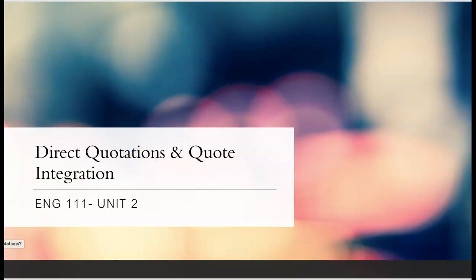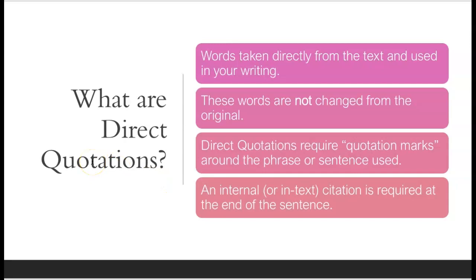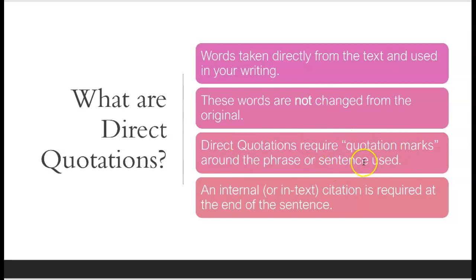Direct quotations are words taken directly from the text — the author's words, not changed from the original. In order to show that they are the author's words and not yours, they require quotation marks around the phrases or sentences. If you fail to do that, that is plagiarism. In addition to quotation marks, you also need an in-text parenthetical citation at the end of the sentence.